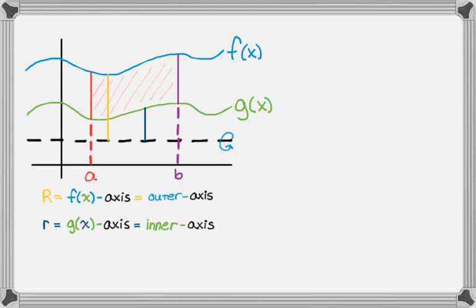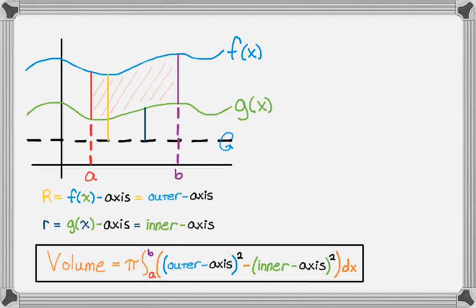And then the volume, the total volume, you're really just doing big volume minus small volume, which is a fine way to do it. Or you might choose to remember it as the volume is equal to pi, the integral from a to b, the quantity, and then another quantity, outer minus axis squared, minus quantity inner minus axis squared, and then dx. So in this case, what you're doing is outer minus axis squaring it, minus inner minus axis squaring that.